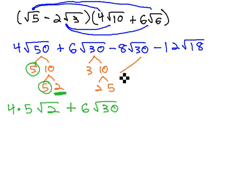The next radical has a root 30 as well. There's no need to factor it twice. We already know that 30 cannot reduce, so we'll leave that as negative 8 root 30.